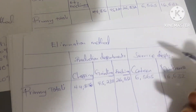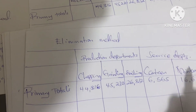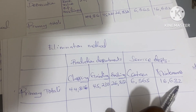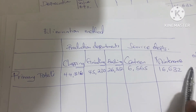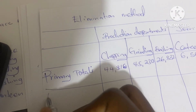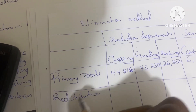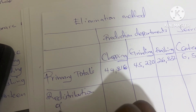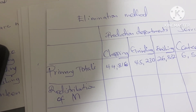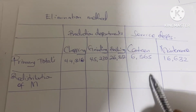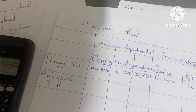After that we have to redistribute for the service departments. We start with the one with the highest costs. We have two service departments, and maintenance has the highest cost, so we shall start with the redistribution of maintenance overhead. Maintenance allows inter-servicing, so we are also going to share with the canteen department.